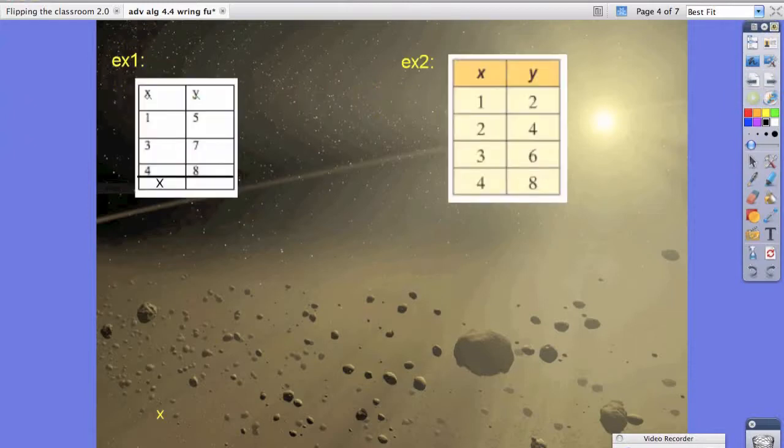Now if we look at example 1, we have our values for x and y. Now our first value for x is 1, and then we went to 5. 3 went to 7. 4 went to 8. Now what we're really trying to do is we're trying to find out, given any value for x, how would we figure out what the y value is?